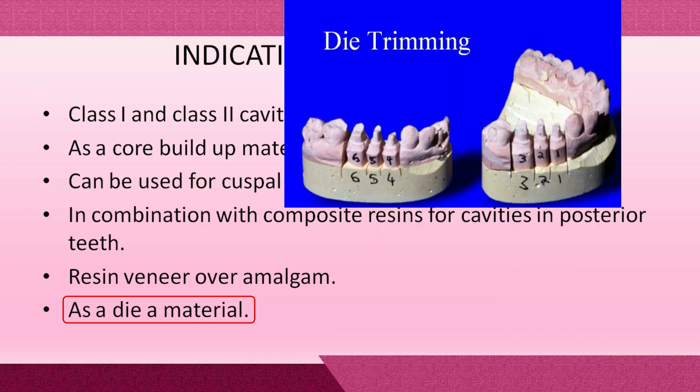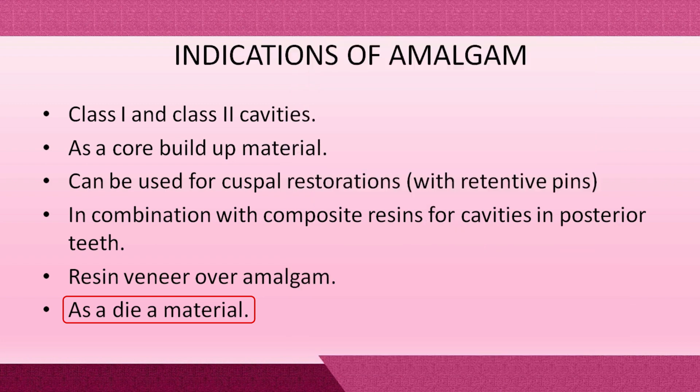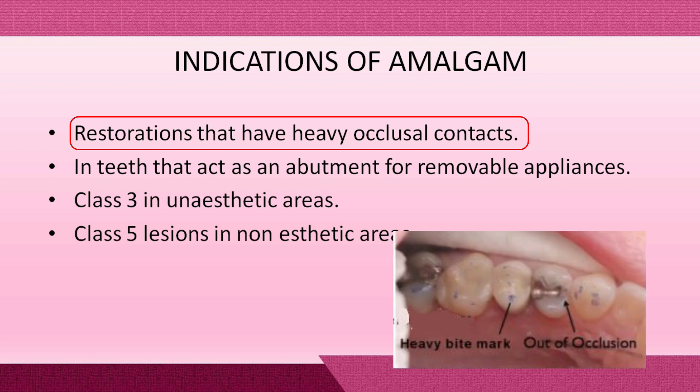Dental amalgam can be used as a die material. A die is a positive reproduction of prepared teeth that can be made from a gypsum product, epoxy resin, a metal, or a refractory material. In the case of an amalgam die, they are made by packing amalgam into an impression made of impression compound. Dies made of amalgam exhibit superior strength, resistance to abrasion, and reproduce fine details and sharp margins.